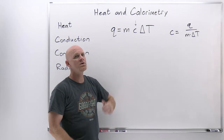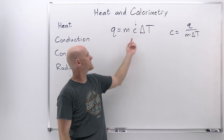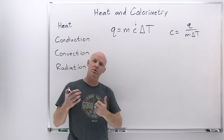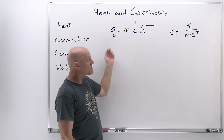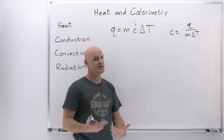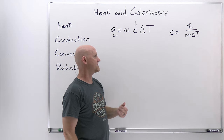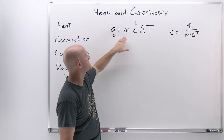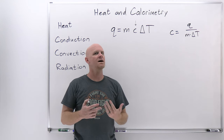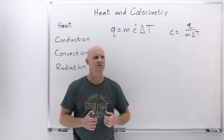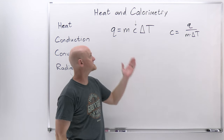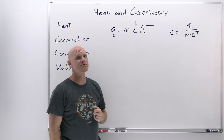This equation has four variables. With three known, you can calculate the fourth. The heat is proportional to the mass: if you want to raise the temperature of 10 grams instead of 1 gram by one degree Celsius, it takes 10 times as much heat. That makes intuitive sense.